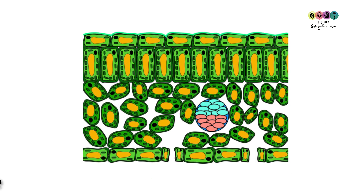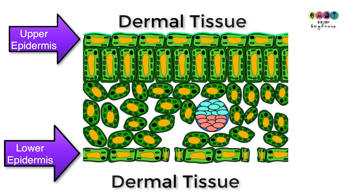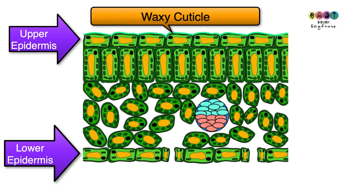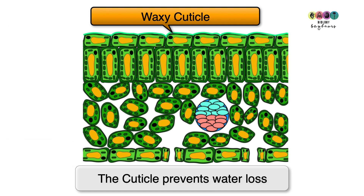The dermal tissue is present towards the outer parts of the leaf. It's known as the epidermis, with a layer of epidermal cells at the top and bottom of the leaf. The epidermal cells on the upper surface secrete a waxy substance known as a cuticle, which is there to prevent excess water loss. Remember, the function of dermal tissue is protection.